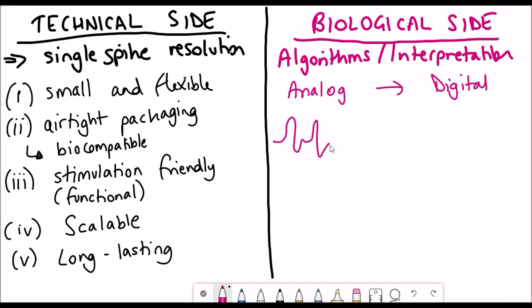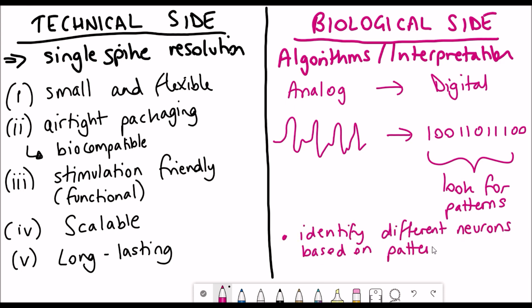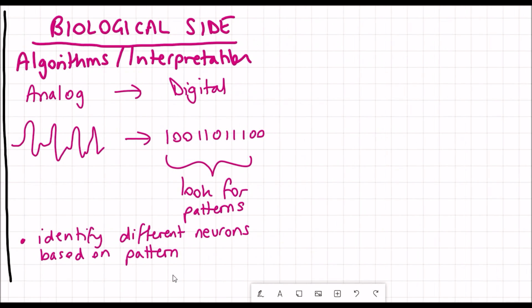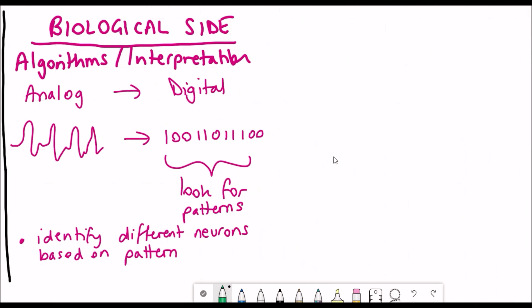One way that they want to do this is firstly by converting these analog spike signals into a digital signal and then use those digital signals to look for patterns and as one electrode could detect more than one neuron you need to also be able to identify different neurons that could be combined in the same signal.